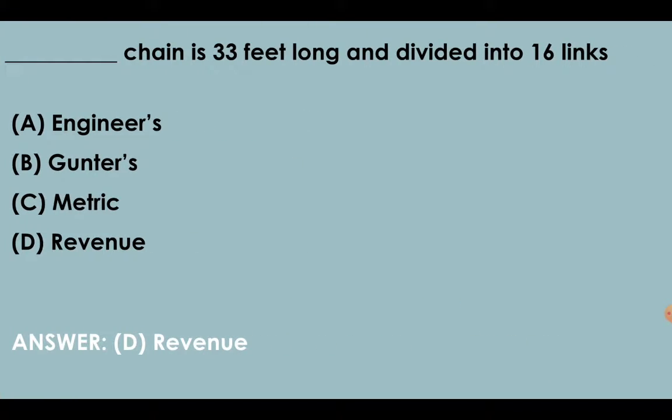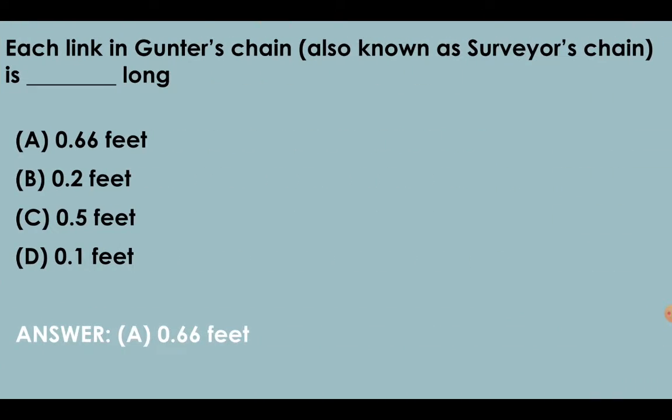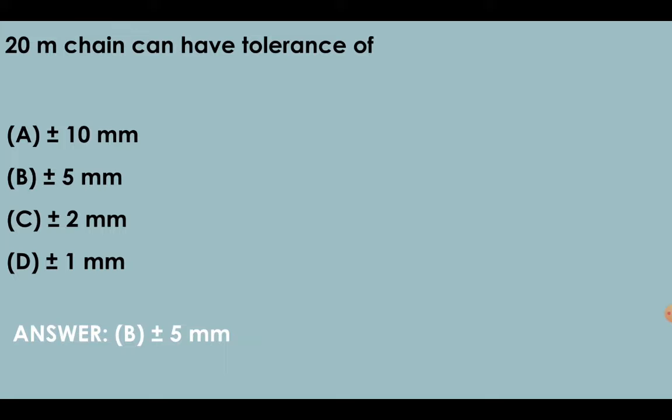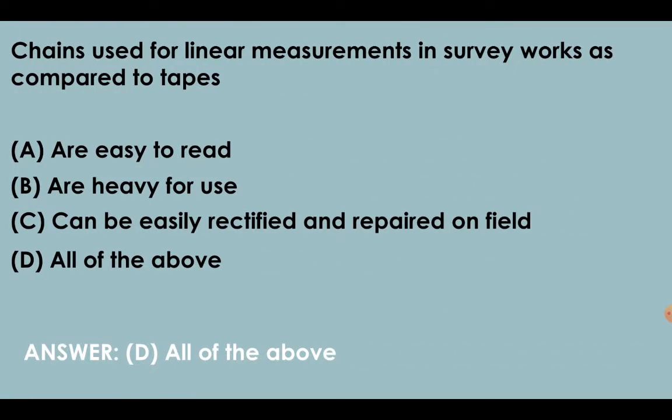Revenue chain is 33 feet long and is divided into 16 links. Length of a chain is measured from outside of one handle to outside of other handle. Each link in Gunter's chain, also known as service chain, is 0.66 feet long. 20-meter chain can have a tolerance of plus minus 5 mm. Engineer's chain is 100 feet long and has 100 links - one foot is the length of each link.